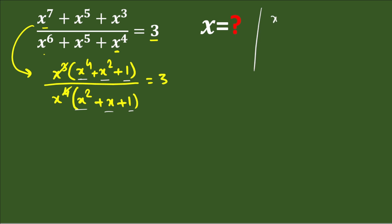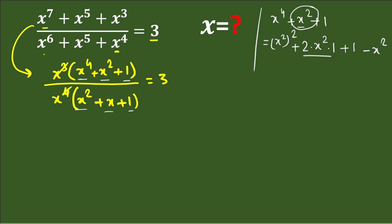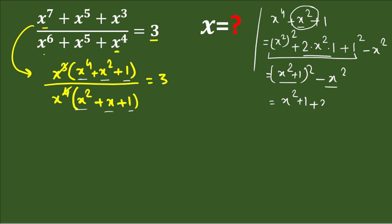Let's see how we can convert x⁴ + x² + 1. We write x⁴ as (x²)², and then write x² as 2·x²·1 so we can form a perfect square, plus 1 as it is. Since we've added 2x² but have only x², we subtract x². This gives us (x² + 1)² − x², which is in the form a² − b². So we can write it as (x² + 1 + x)(x² + 1 − x).